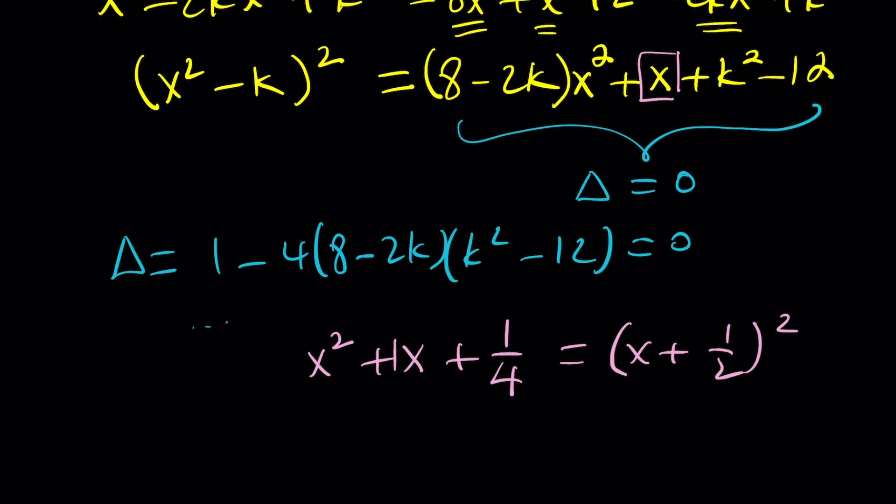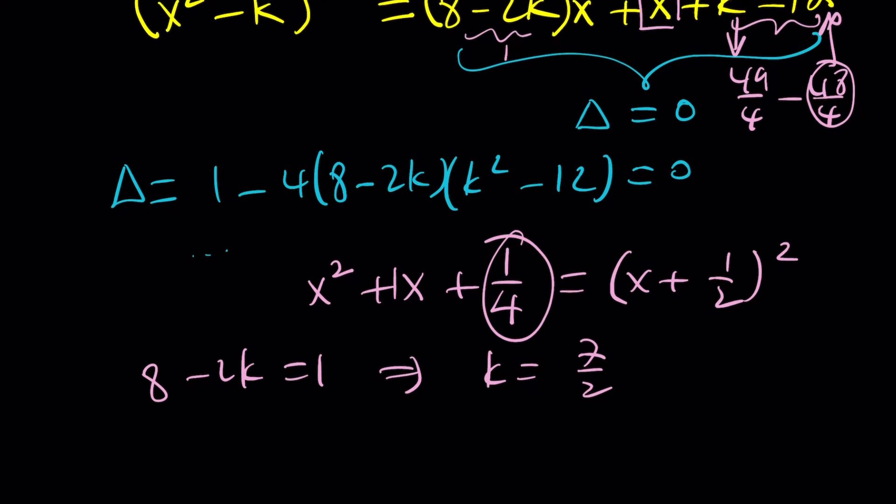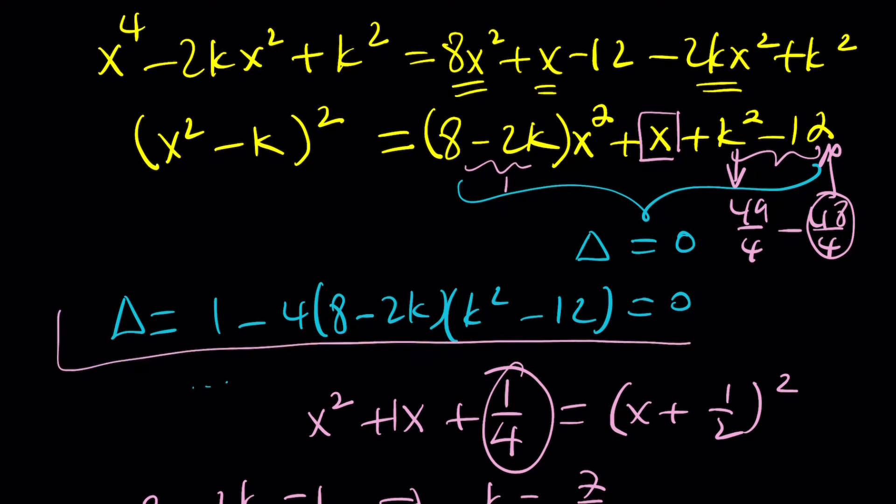Is that going to work? Yes. Because if you set this equal to 1 fourth and set it equal to 1, you're going to get the following. 8 minus 2k equals 1 gives you 2k equals 7, which means k equals 7 halves. And k equals 7 halves, if you plug it in here, you're going to get 49 over 4 minus 48 over 4, which is 1 fourth. Because 48 over 4 is basically 12. So it works. Look at that.